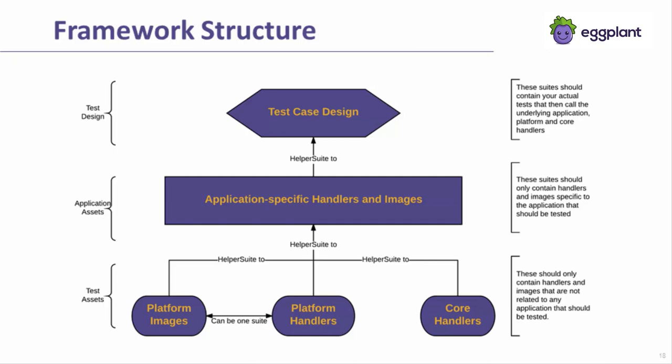The third bottom level of suites will contain images or handlers that are unique to a specific platform. Also at this level, you'll likely have a suite of core handlers and images that are useful across the various applications or platforms you're testing. These different levels of suites are linked together as helper suites, which allows you to view the helper suite assets within the calling suite and make references to any scripts or images stored within them.